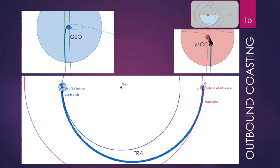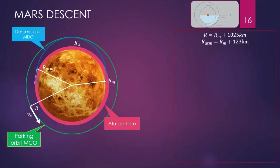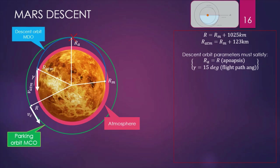We need to calculate the descent orbit from this position, which is also an elliptical trajectory. The parameters of this trajectory must satisfy these conditions: the radius of the apoapsis is equal to the radius of the circular orbit, and the flight path angle when entering the atmosphere must be 15 degrees — this is an experimental condition depending upon the type of spacecraft. We assume the Mars atmosphere has a thickness of 123 kilometers.